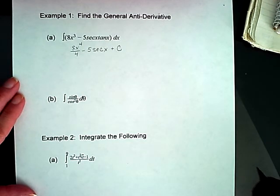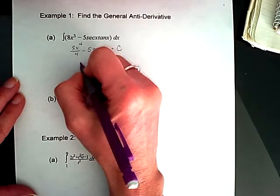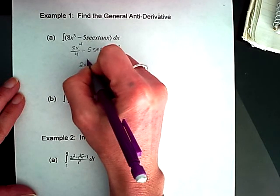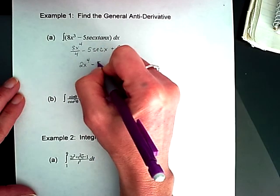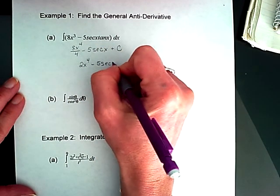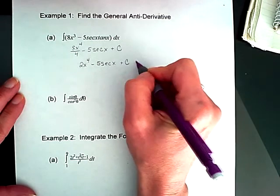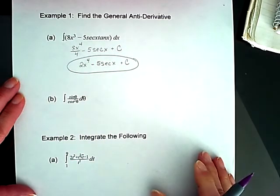Since this is an indefinite integral, I'm going to use the family of functions with my constant that is unknown at this time. I'm going to simplify this quickly. That gives me 2x to the fourth minus 5 secant of x plus c. That's my general antiderivative.